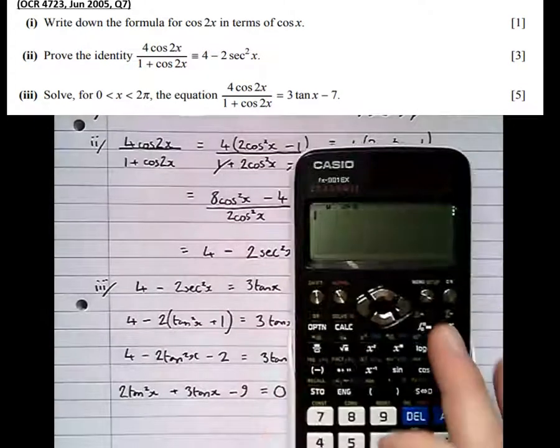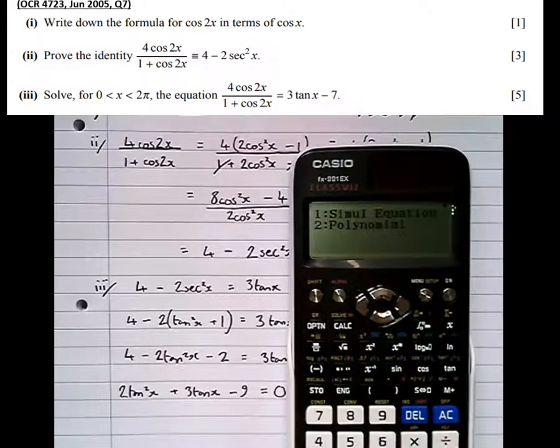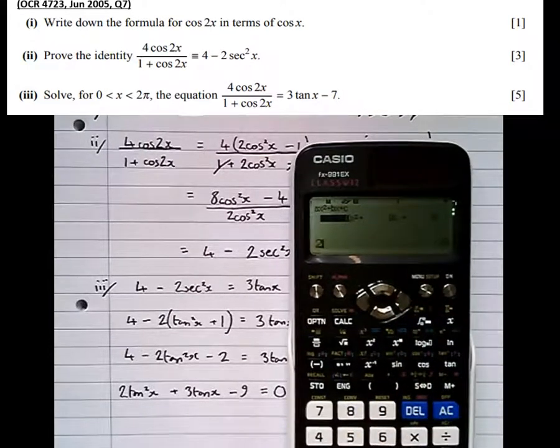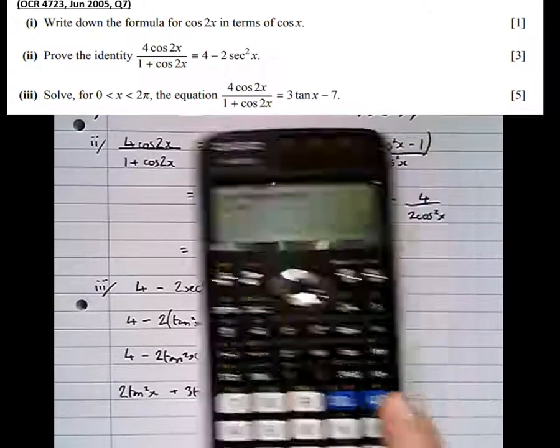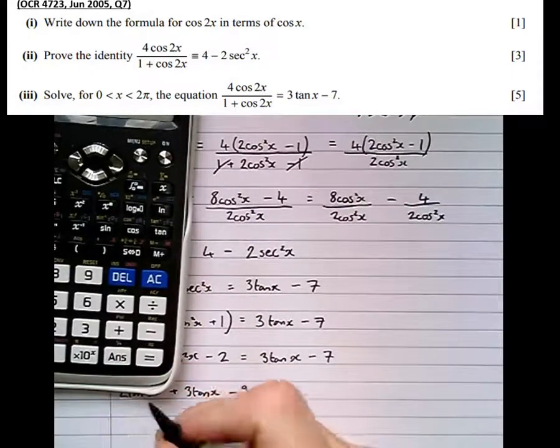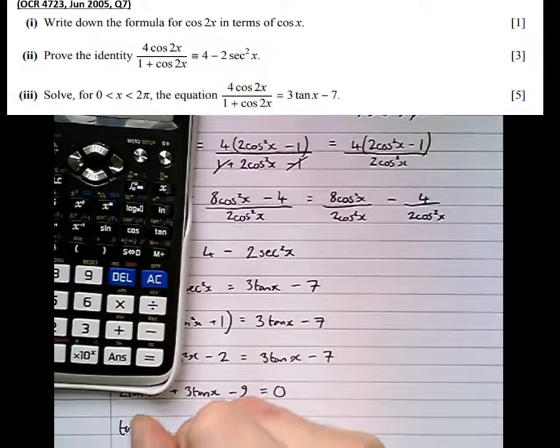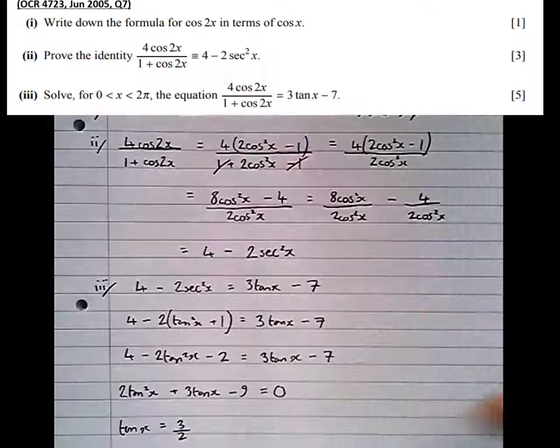And solving this using our quadratic solver. Polynomial degree 2. So 2 tan squared x plus 3 tan x minus 9. So one of the solutions is tan x equals 3 over 2. And the other solution is tan x equals minus 3.